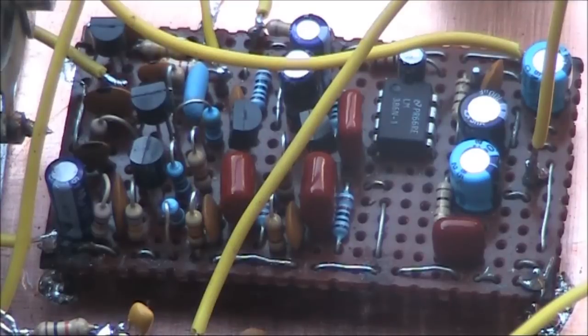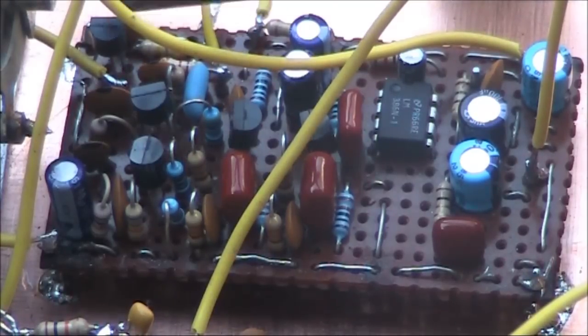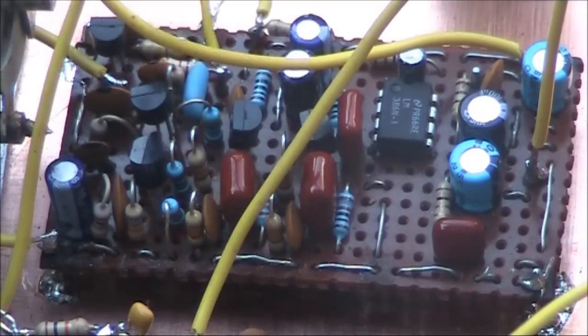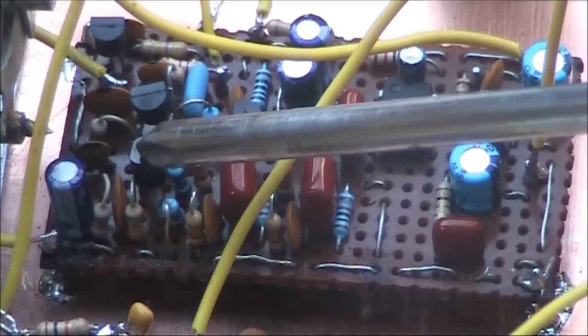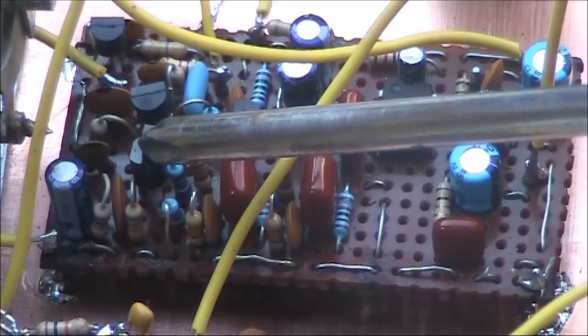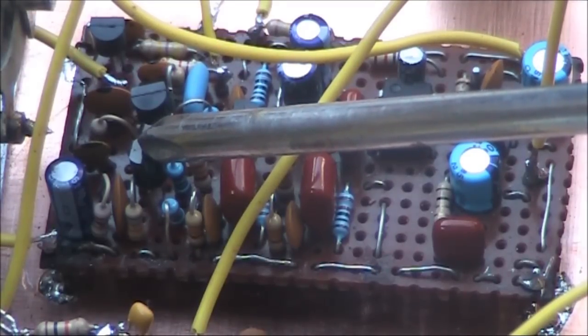Just taking a look at the receiver circuit board in more detail. Here's the RF amplifier transistor. This is the regenerative detector. And here's the audio preamp. The circuitry is the same as in my previous videos.